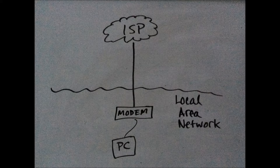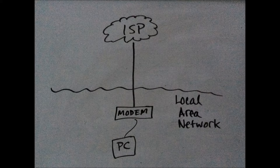Back when the internet was just a baby, there were not many people using it. The predominant method of getting online was dial-up. Basically how it worked was you connected your computer to a modem. Not many people know the difference between modems, routers, and switches. A modem — short for modulator-demodulator — is a device that changes the form, the encoding, of data.